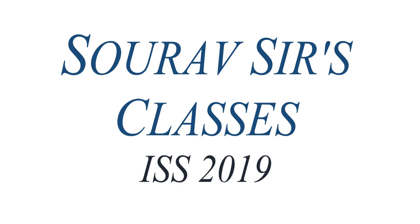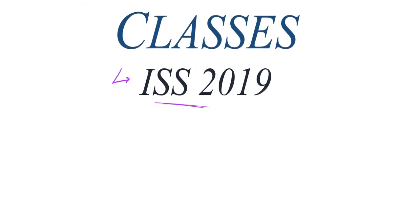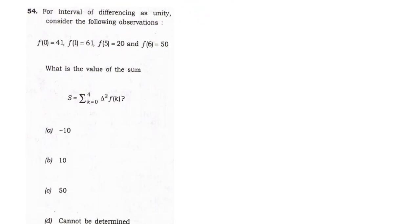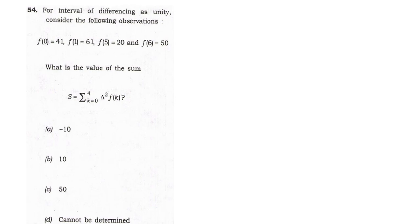Hello students, welcome to this class. In this video we are going to solve a few questions from ISS 2019 Statistics Paper 1. We have been solving this question paper and solved some questions in our previous video. In this video we are going to solve question number 54, which says: for an interval of differencing as unity, consider the following observations.